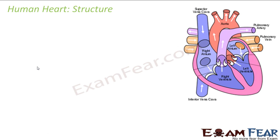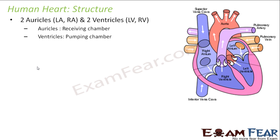Before that, we need a clear understanding of the structure of the heart — what does it consist of? The heart consists of four chambers: two auricles and two ventricles. The auricles are the receiving chambers — memory tip: A-I-R, auricle is receiving. The ventricles are the pumping chambers — V-I-P, ventricle is pumping.